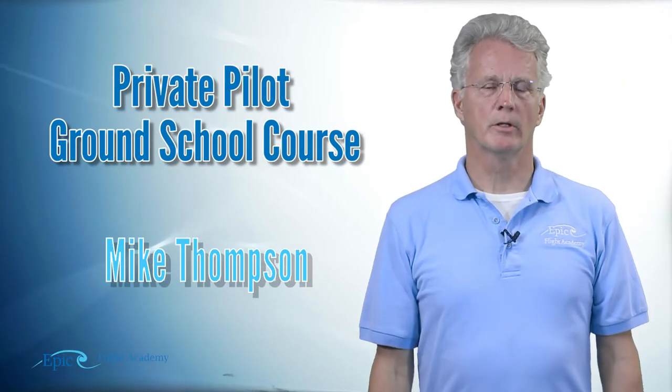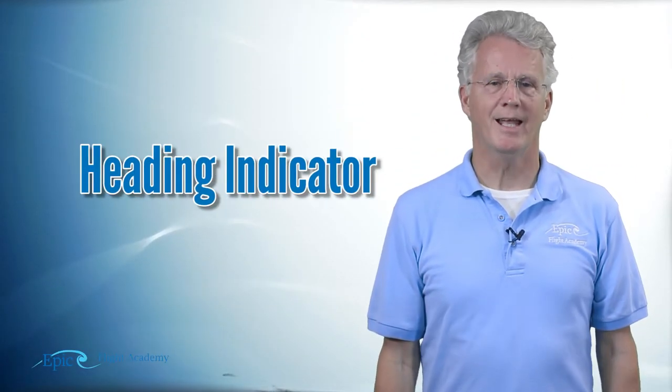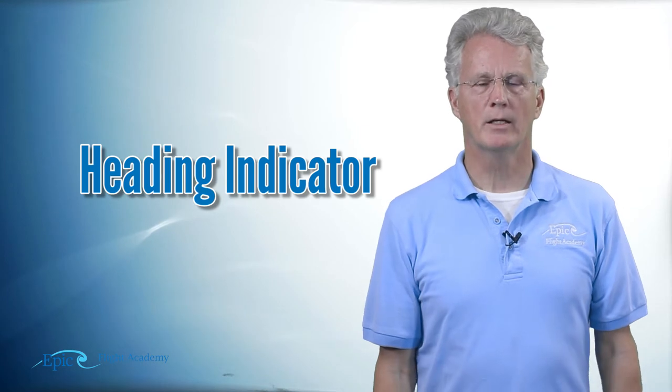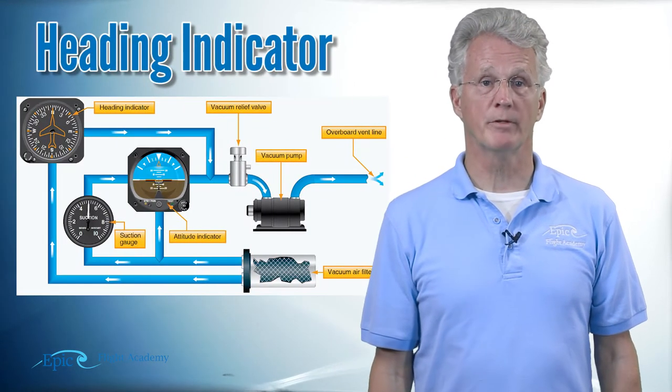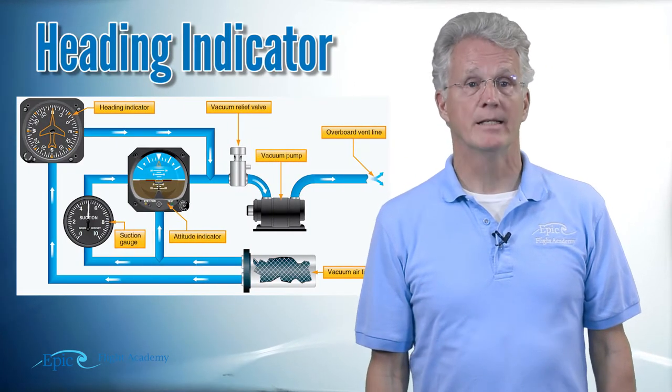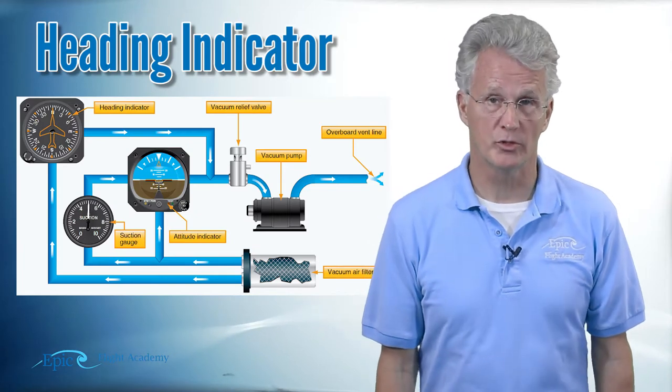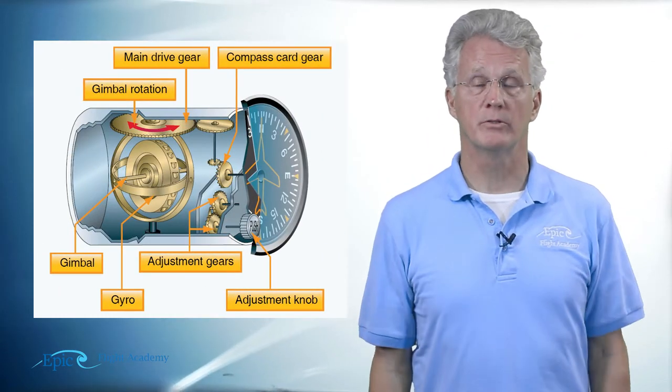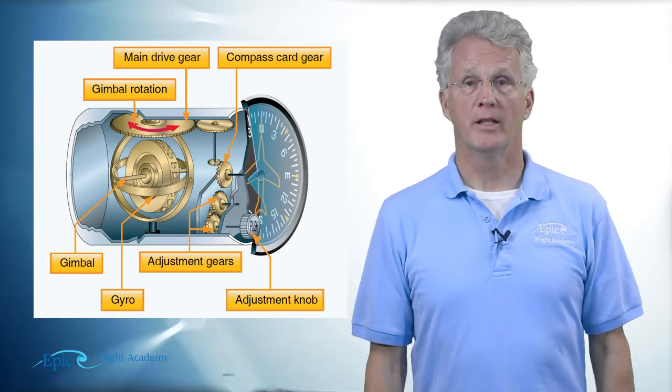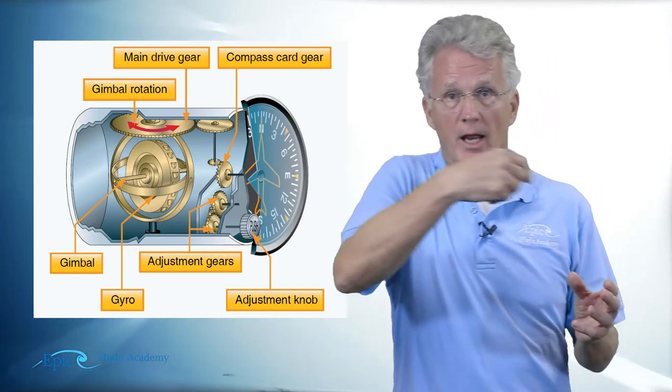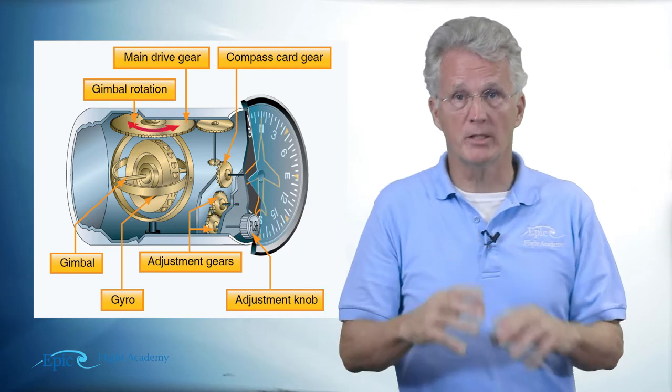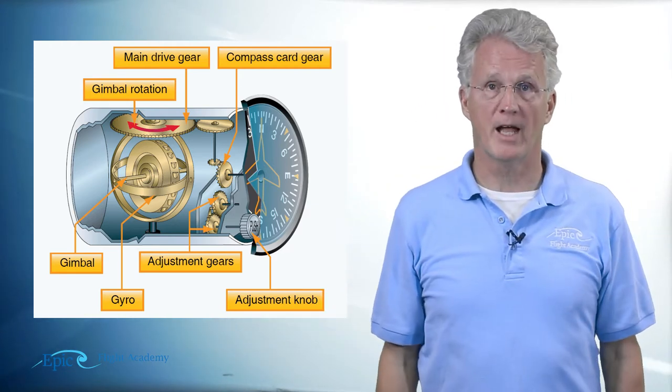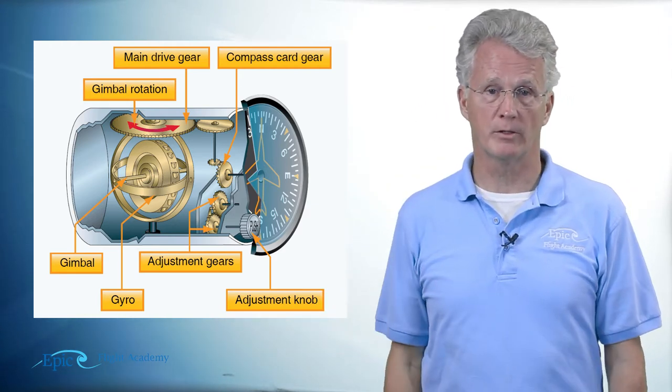Now let's have a look at the heading indicator. The heading indicator is a gyroscopic flight instrument and it is powered by the vacuum system. That means there's a gyro spinning inside this instrument and that gyro is having air pulled across it to make it spin real fast. That's the work of the vacuum system.